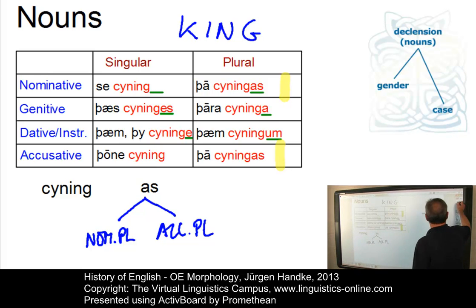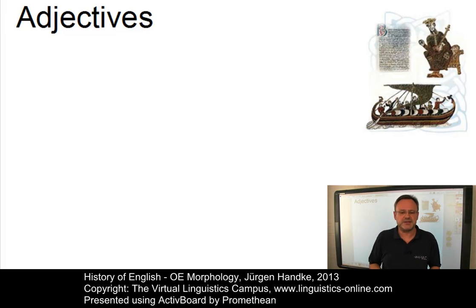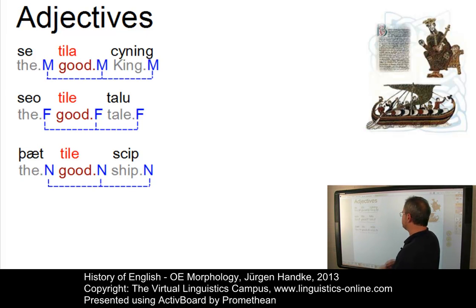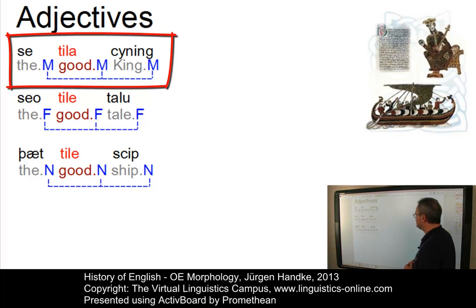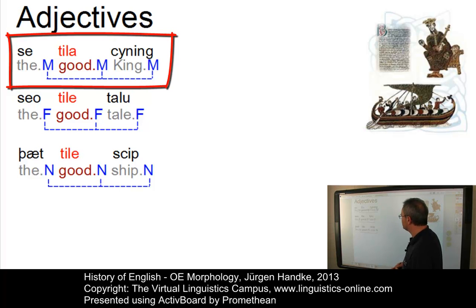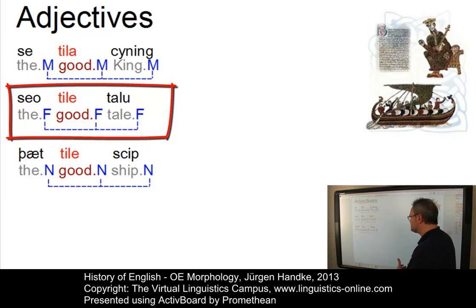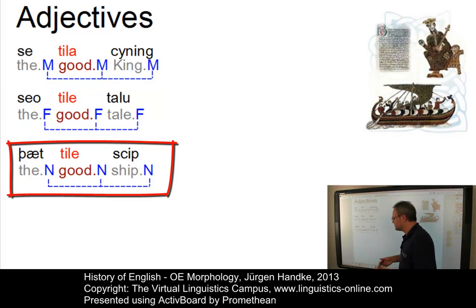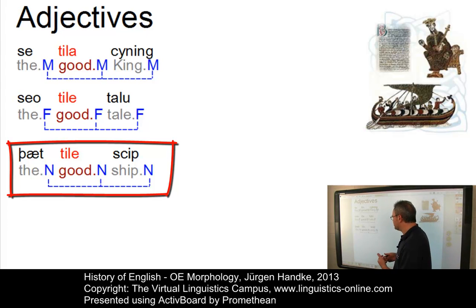The adjective was the most highly inflected category of Old English. It followed the noun in terms of gender, case and number. Here are three examples: 'gōdne cyning,' the good king, where cyning is masculine and consequently the determiner and the adjective are masculine too; 'gōde talu,' the good tale, which is feminine, with a feminine form of the adjective and the determiner; and 'gōd scip,' the good ship, where scip is neuter and the other items are marked with the neuter gender form.